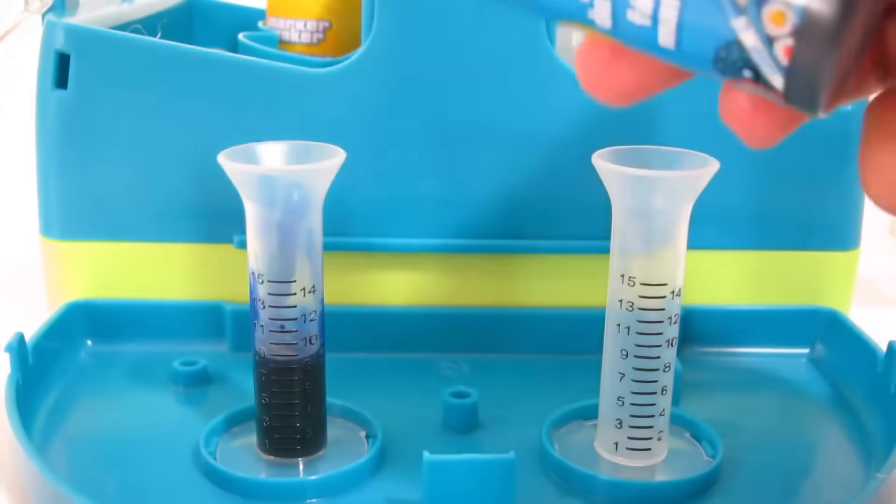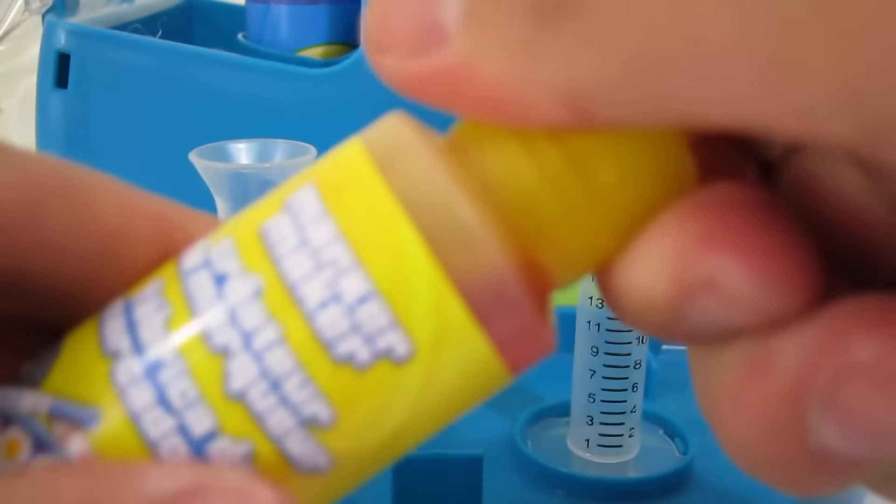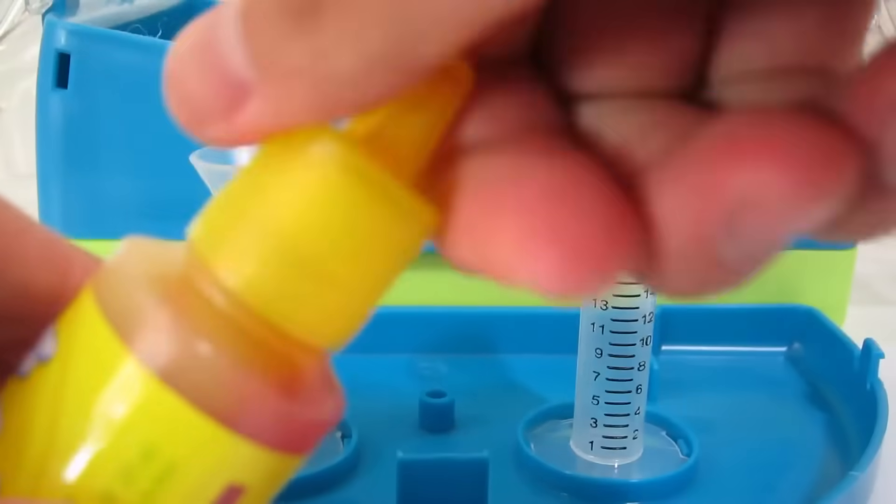We got 9 blue. Now let's add the yellow. You can add 6 parts or just fill it up to 15.